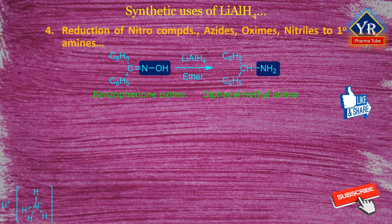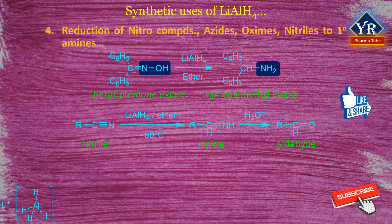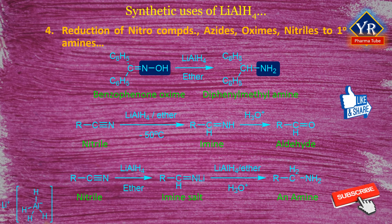Reduction of nitriles with lithium aluminium hydride may give an amine or aldehyde depending on the conditions of the reaction. Aldehydes are obtained when a solution of lithium aluminium hydride is added to a solution of a nitrile in dry ether or tetrahydrofuran at low temperature. Amines are obtained when a solution of nitrile is added to the solution of lithium aluminium hydride in ether or tetrahydrofuran.